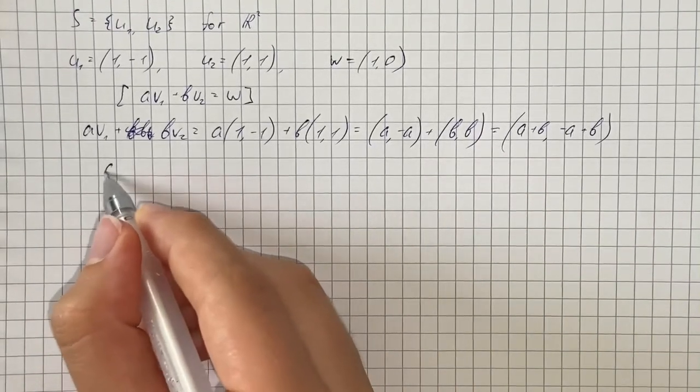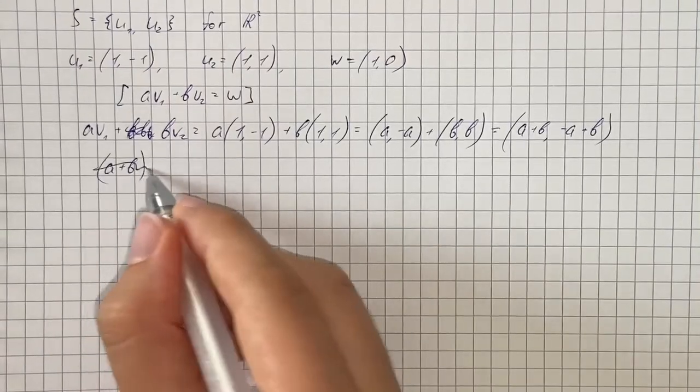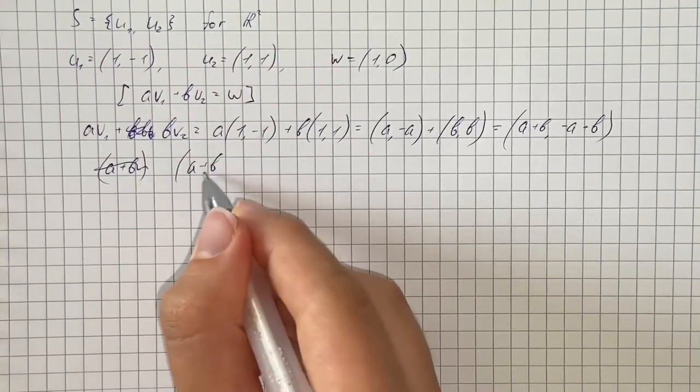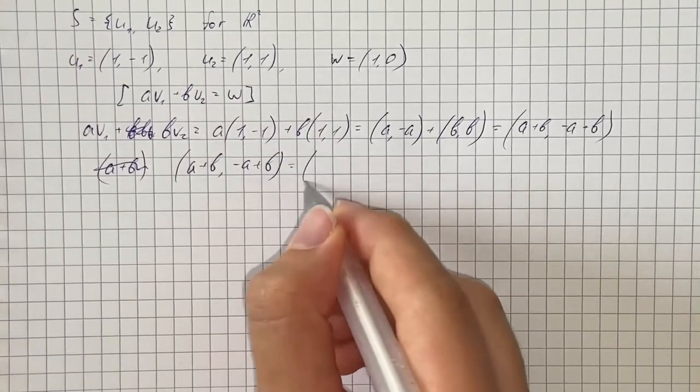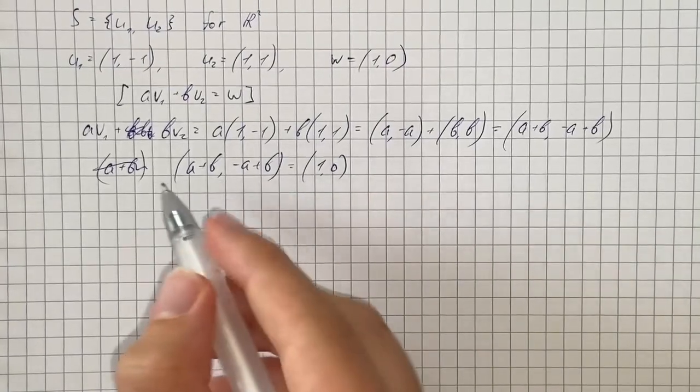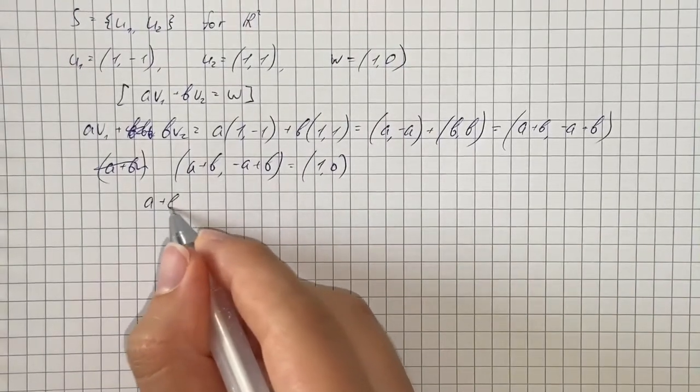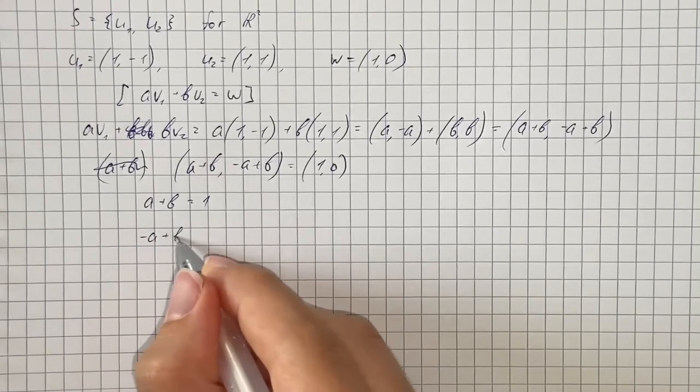That means that (A + B, -A + B) equals (1, 0) which leads us to the linear system where A plus B equals 1 and negative A plus B equals 0.